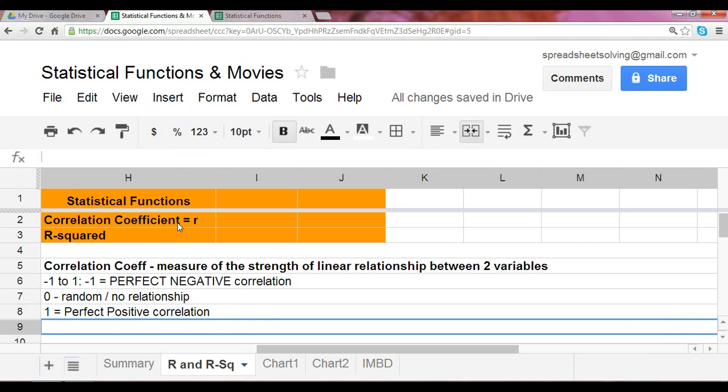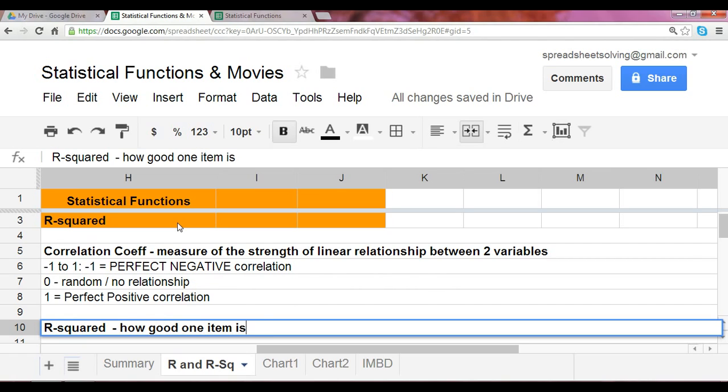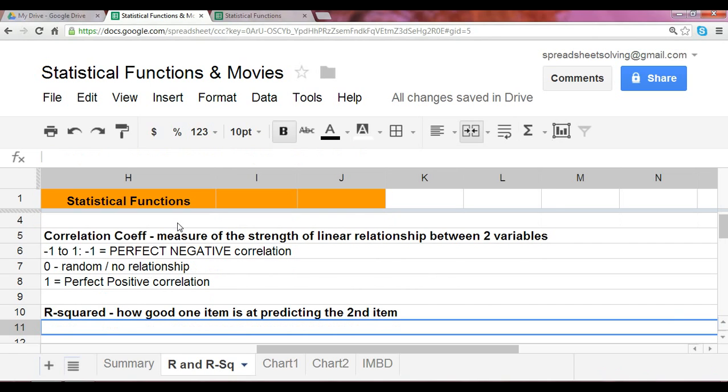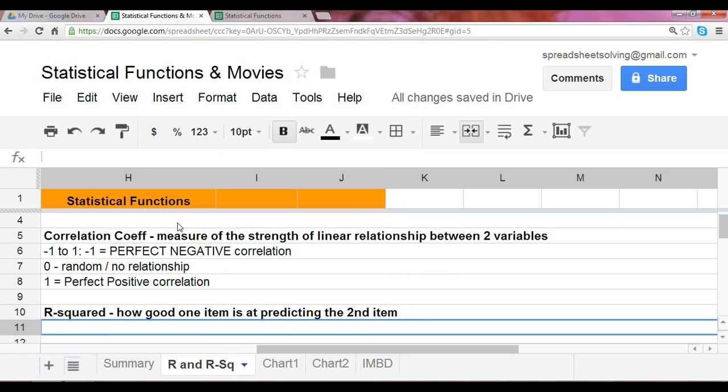Now, let's understand what the r-squared is. The r-squared can mathematically be computed as the square of the correlation coefficient. But conceptually, it tells you how good one item is at predicting the second item. This r-squared only takes on values between 0 to 1, or 0 to 100%. And the higher the r-squared is, means you can better predict one item from another.